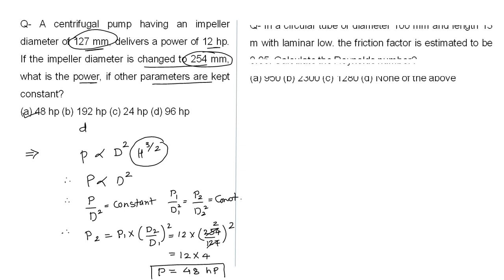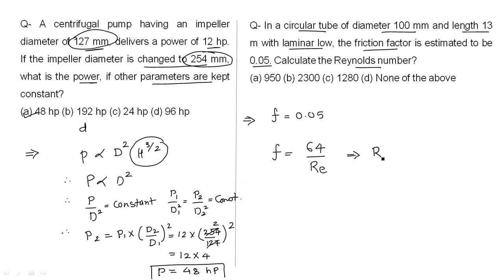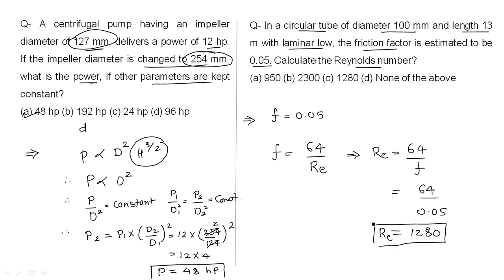The second example: in a circular tube, diameter is 100 mm, length is 30 meter, laminar flow. The friction factor F is given as 0.05. You need to calculate the Reynolds number. We know the friction factor F = 64/Re for a circular pipe. Therefore Reynolds number = 64/F = 64/0.05 = 1280. Answer C is correct.